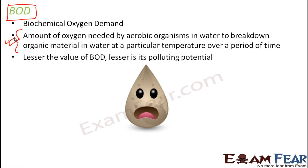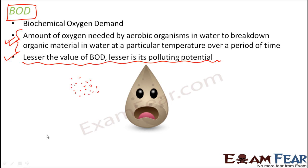Lesser the value of BOD, lesser is its polluting potential. A lesser value of BOD means less oxygen is now needed by aerobic organisms, because less organic matter is present. If a huge amount of organic matter is present, a huge amount of oxygen will be needed by aerobic microbes. As it keeps decomposing, the amount of organic matter keeps reducing. When the amount of organic matter is very less, the amount of oxygen needed by the microbes will also be very less. So the amount of oxygen needed is nothing but BOD or biochemical oxygen demand.